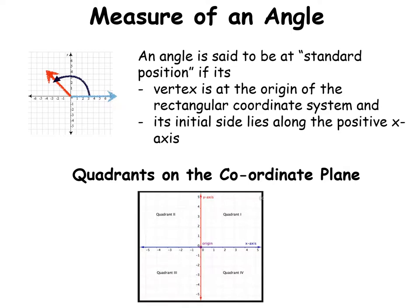Just quickly to revise our quadrants — this is one that students tend to get a little bit bogged down in. Quadrant one is top right: positive x, positive y. We then move into the top left, quadrant two: negative x, positive y. Quadrant three is negative x and negative y. Quadrant four is bottom right: positive x and negative y. They start top right and we rotate anti-clockwise around.